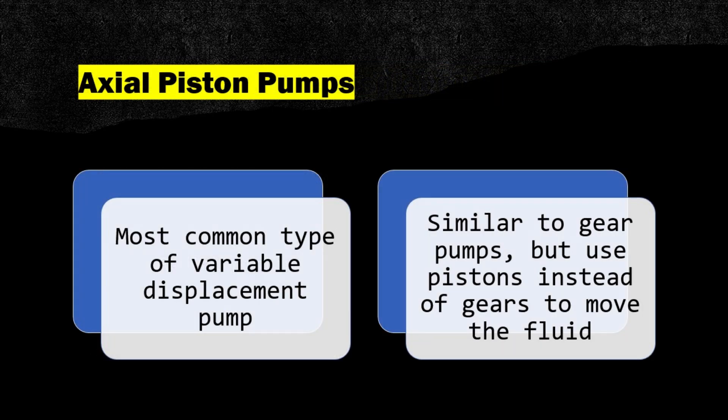Axial piston pumps are the most common type of variable displacement pump. They are similar to gear pumps, but use pistons instead of gears to move the fluid.